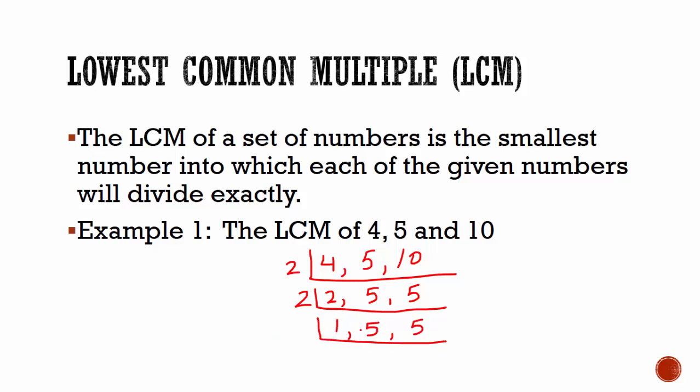Now we realize that 2 cannot go into any of these exactly so we try the next prime number which is 3. 3 cannot go into any exactly either so we try the next number which is 5. 1 cannot go into 5 exactly. 5 into 5 is 1. 5 into 5 is 1. When we reach the ones, we are finished.